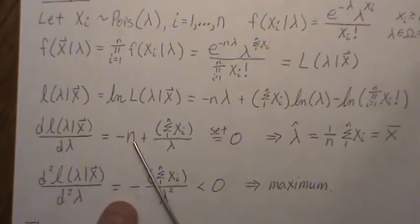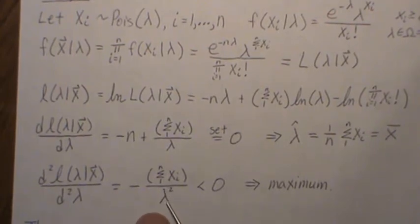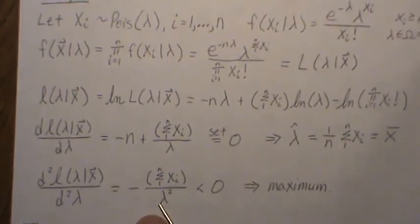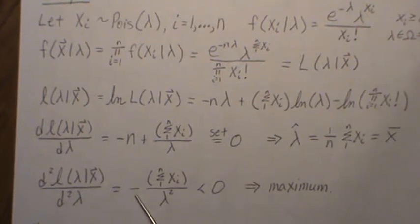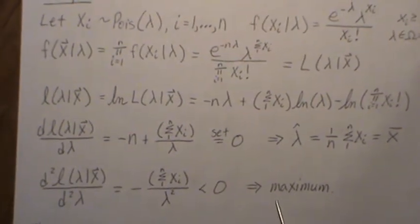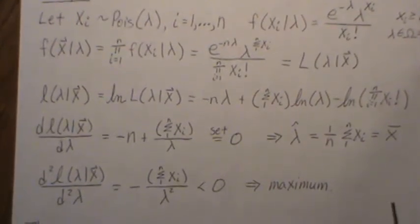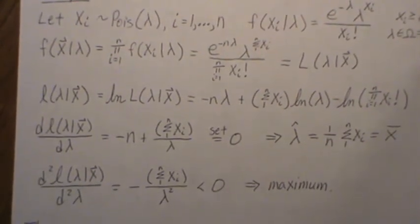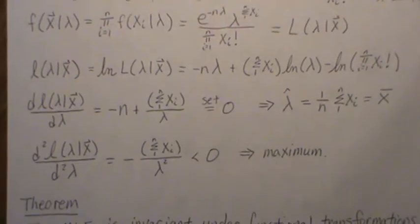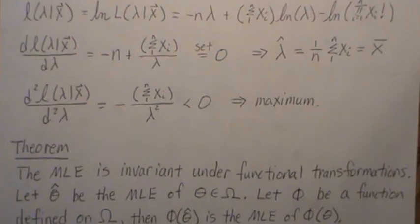To confirm this is a maximum, we take the second derivative. The first term is zero, and the second term is minus the sum of xᵢ's over lambda squared. Since the sum of xᵢ's is always positive and the minus sign makes it negative, the second derivative is always negative, confirming that this critical point is indeed a maximum. That's how you derive maximum likelihood estimation.